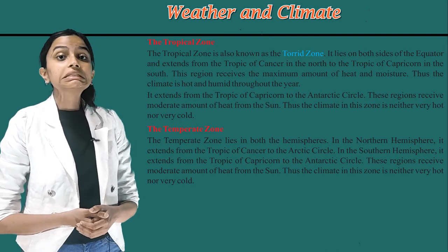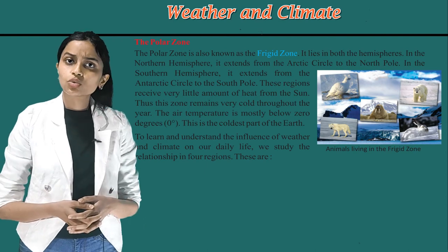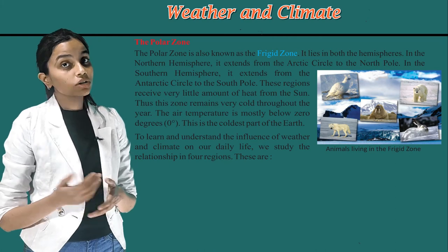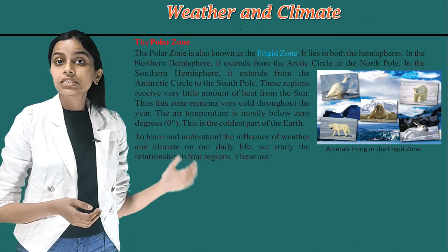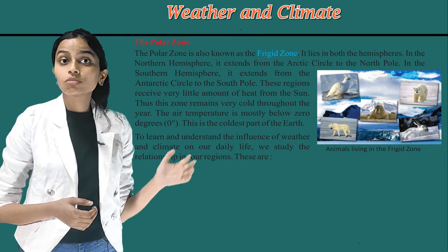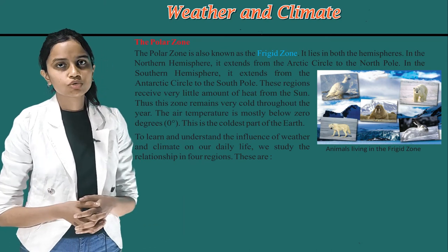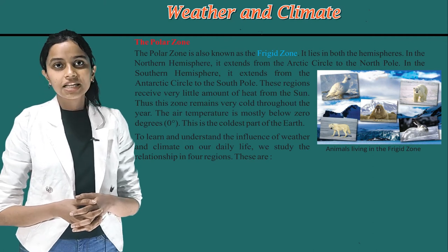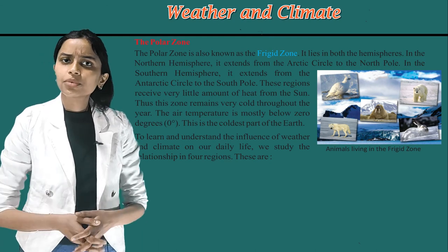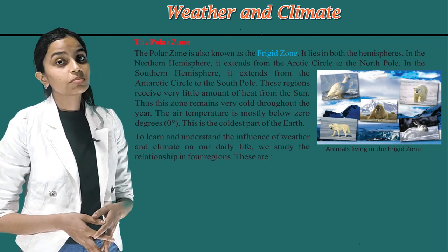The third heat zone is the polar zone, also known as the frigid zone. It lies in both hemispheres. In the northern hemisphere, it extends from the Arctic Circle to the North Pole. In the southern hemisphere, it extends from the Antarctic Circle to the South Pole. These regions receive very little amount of heat from the sun. Thus, the zone remains very cold throughout the year. The air temperature is mostly below zero degrees. This is the coldest part of the earth.